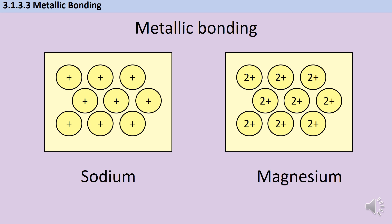So you would expect magnesium to have a higher melting point, which it does, and also to be harder, which it is. You've probably seen sodium being cut with a scalpel before, but if you tried that with magnesium, you just wouldn't get very far.